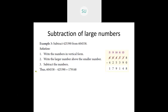Start subtracting from the 1s place. We have 8 minus 0 — any number minus 0 is that number itself, so 8 minus 0 is 8. Then 3 minus 9 — we can't do that, so we borrow 1 from the 100s place which is 5. The 5 becomes 4 and the 3 becomes 13. So 13 minus 9 is 4. Write down 4. Then 4 minus 3 is 1.